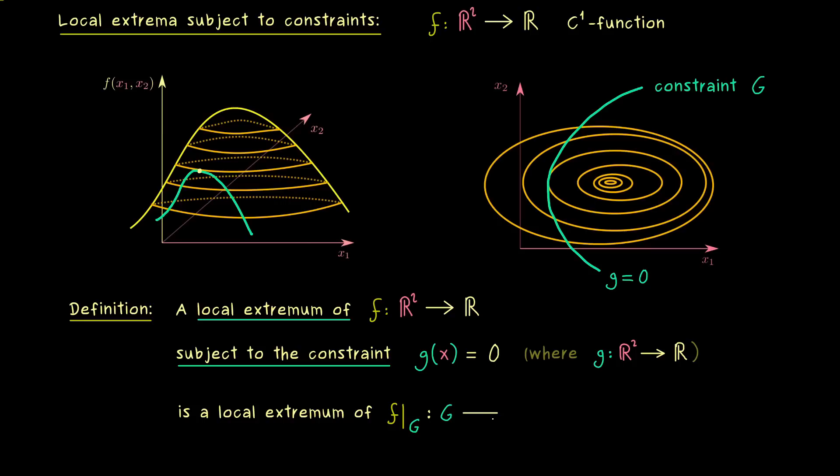Indeed we already know that G is just a contour line from above, so all points x in R² that satisfy that g(x) = 0. So there we have our new domain and there we want to find the local extrema.